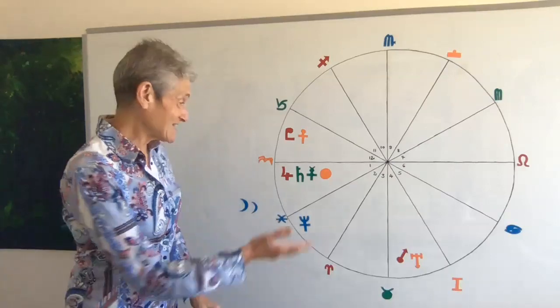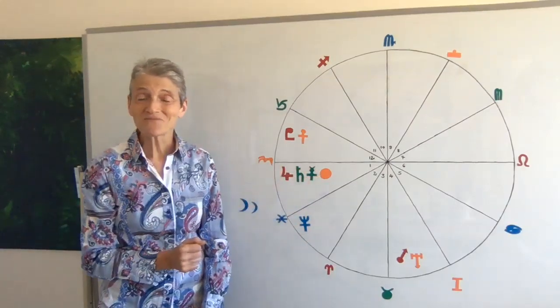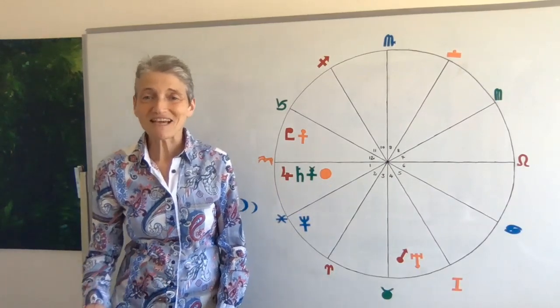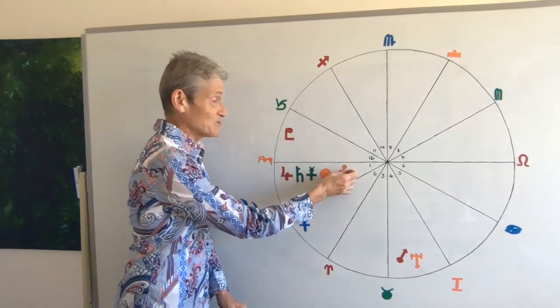Most of the planets here—Sun, Mercury, Saturn, Jupiter—are in your first house of you. On the second of the month, Venus is joining the party.